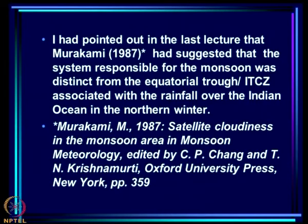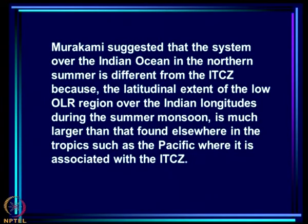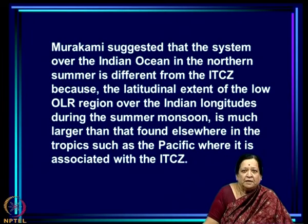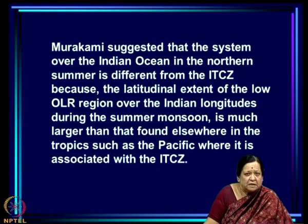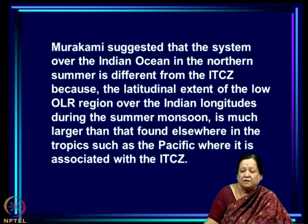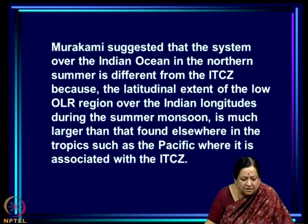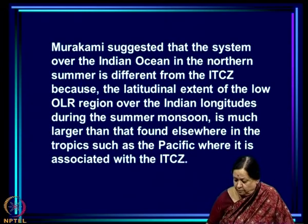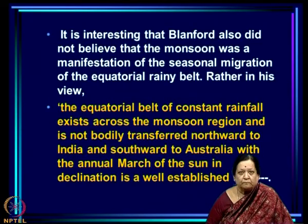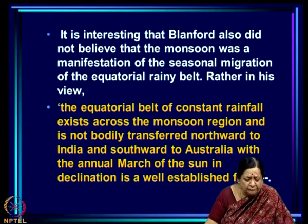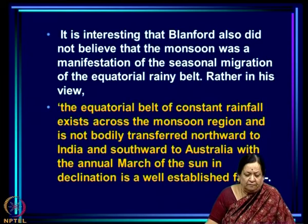This was noted in the other major book on monsoon, which came out in 1987 by Chang and Krishnamurti. Murakami suggested that the system over the Indian Ocean in the northern summer is different from the ITCZ because the latitudinal extent of the low OLR region — which is the region of convection or rain over the Indian longitudes during the summer monsoon — is much larger than that found elsewhere in the tropics, such as the Pacific. Whereas the extent is about 10 degrees in the Pacific or Atlantic, it is much more like 30 or 40 degrees over the Indian longitudes in the summer.